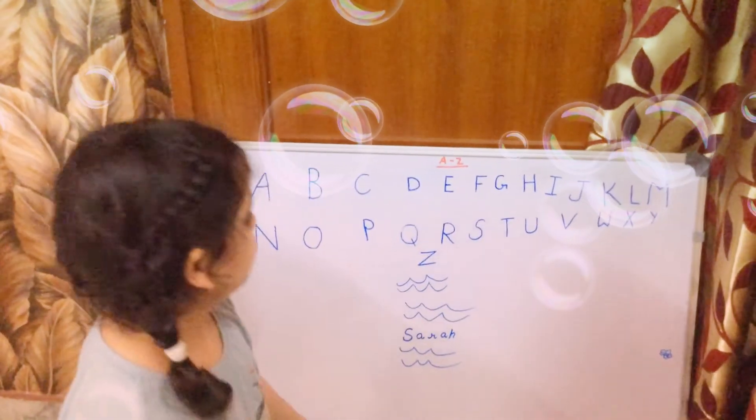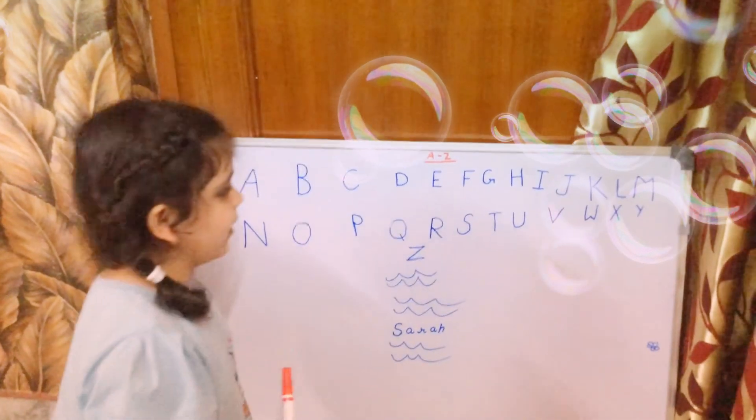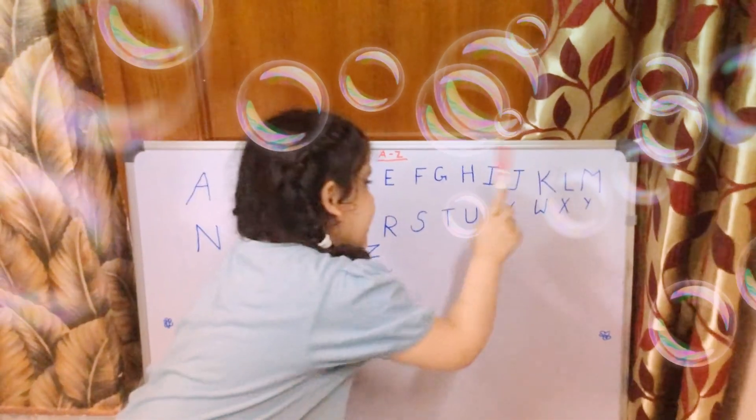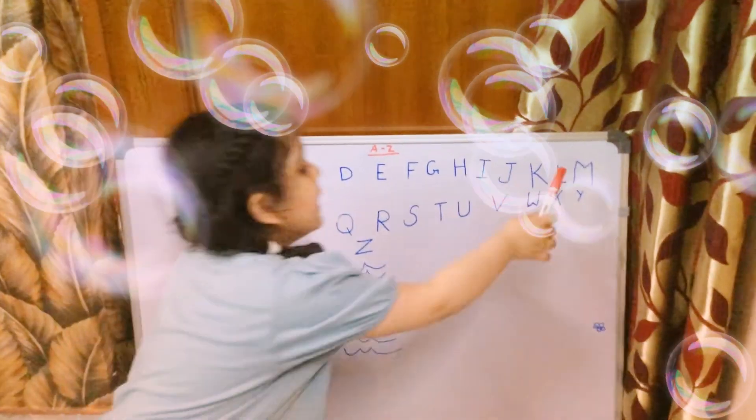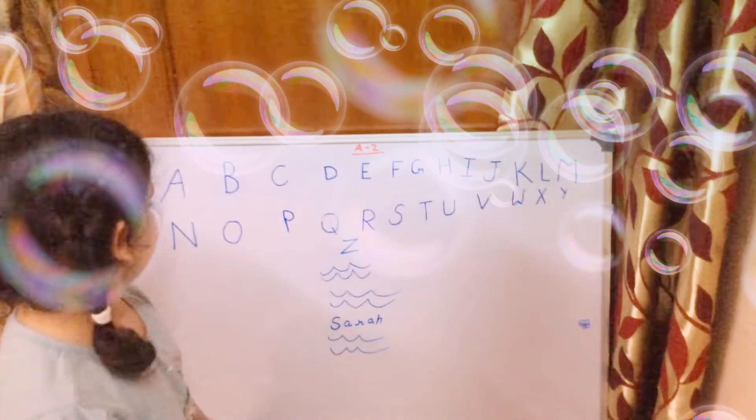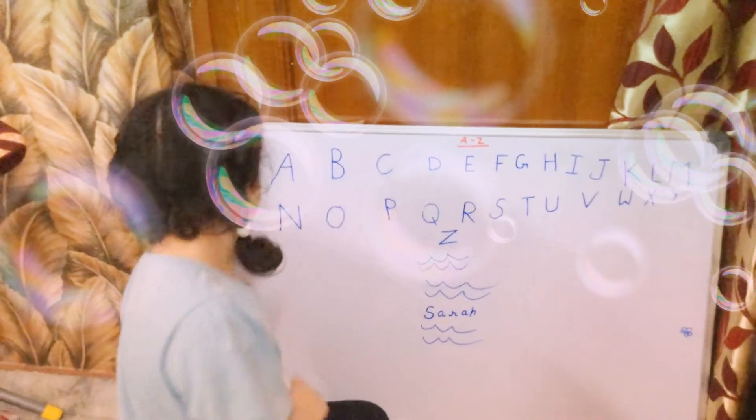H for hen, I for ice cream, J for jug, K for kite, L for lion, M for mango, N for nest.